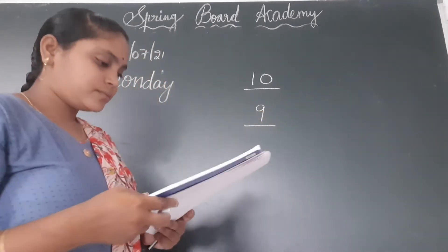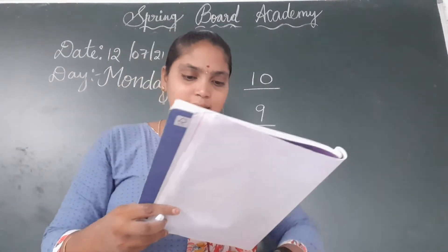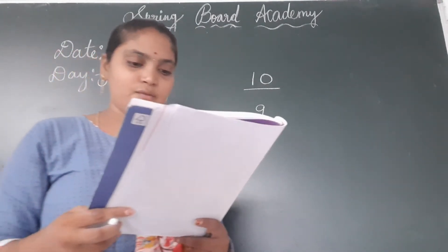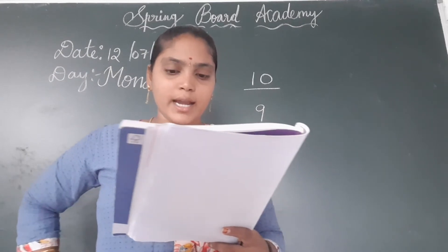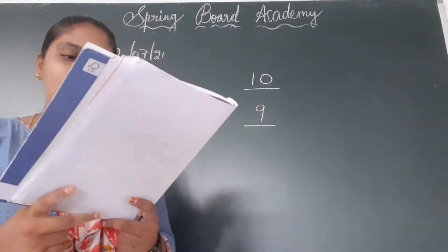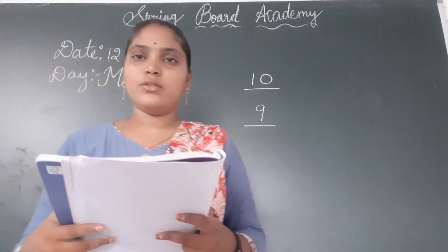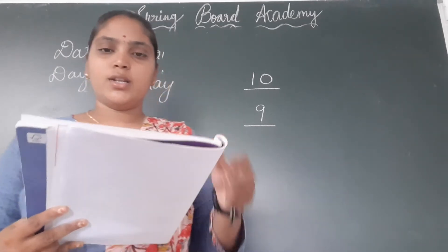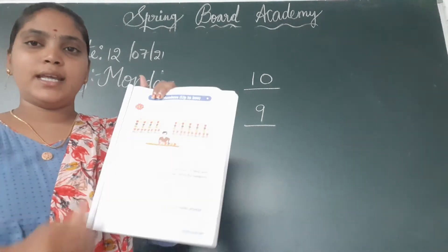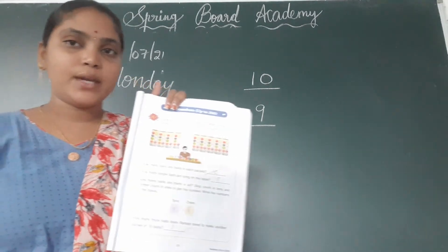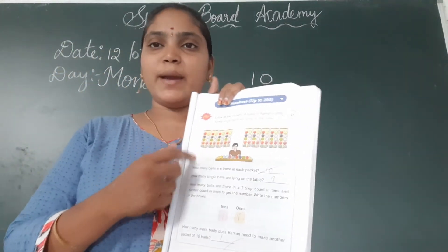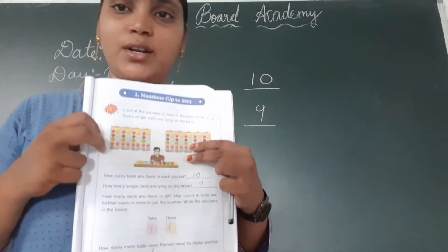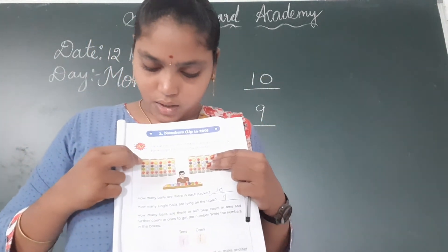How many balls are there in all? Now skip count in 10s and further count in 1s to get the number. Write the numbers in the given boxes. What we have to do children? We have to count the total number of balls. We have to skip count in 10s because each packet has 10 balls. Everyone do along with me, children.